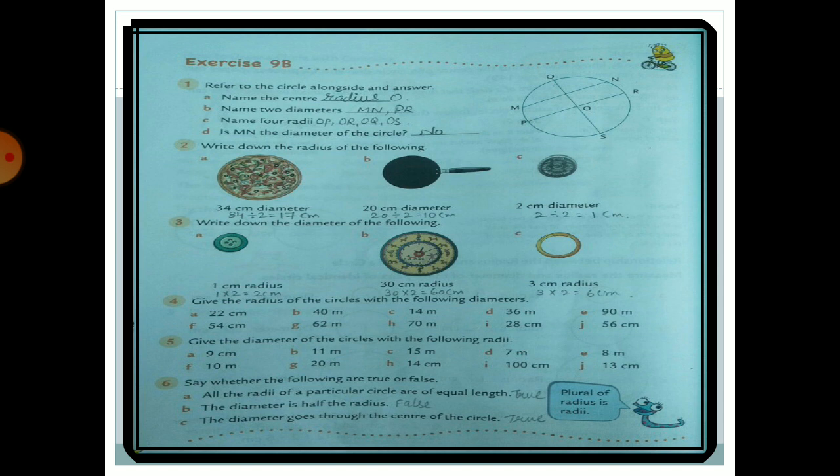Remember: if diameter is given, divide by 2 to get the radius — it becomes half. If radius is given and you need diameter, multiply by 2 — it doubles. A button with 1 cm radius has diameter 1 × 2 = 2 cm. A clock with 30 cm radius has diameter 30 × 2 = 60 cm. A wire circle with 3 cm radius has diameter 3 × 2 = 6 cm.